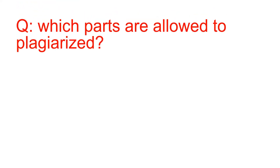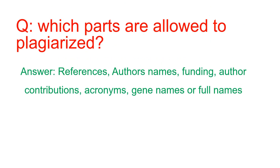So which parts are allowed to be plagiarized and which parts are not allowed in a research article? In my point of view, the references, author names, funding section, author contributions, acronyms, gene names, or full names of any abbreviations are allowed. But if any other text is plagiarized, it would not be allowed.